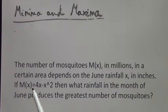If M(x) equals 4x minus x squared, then what rainfall in the month of June produces the greatest number of mosquitoes?